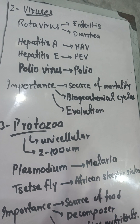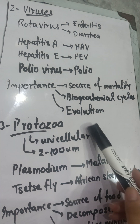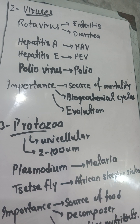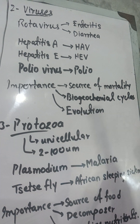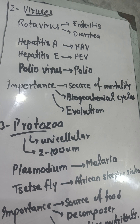Viruses are a source of mortality — they are important for degrading dead matter and play a role in the evolution process. Old animals and plants die, evolution occurs, and new organisms form. Viruses produce space for new ones by degrading old ones. They also play an important role in biogeochemical cycles including the phosphorus cycle, sulfur cycle, carbon cycle, and nitrogen cycle.